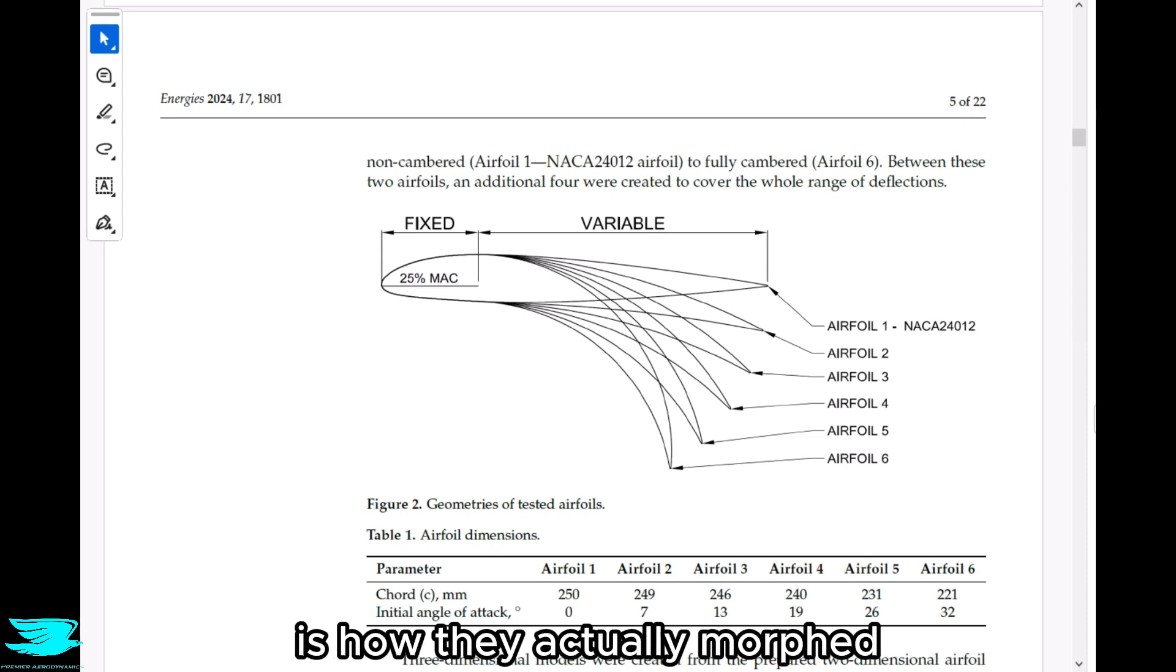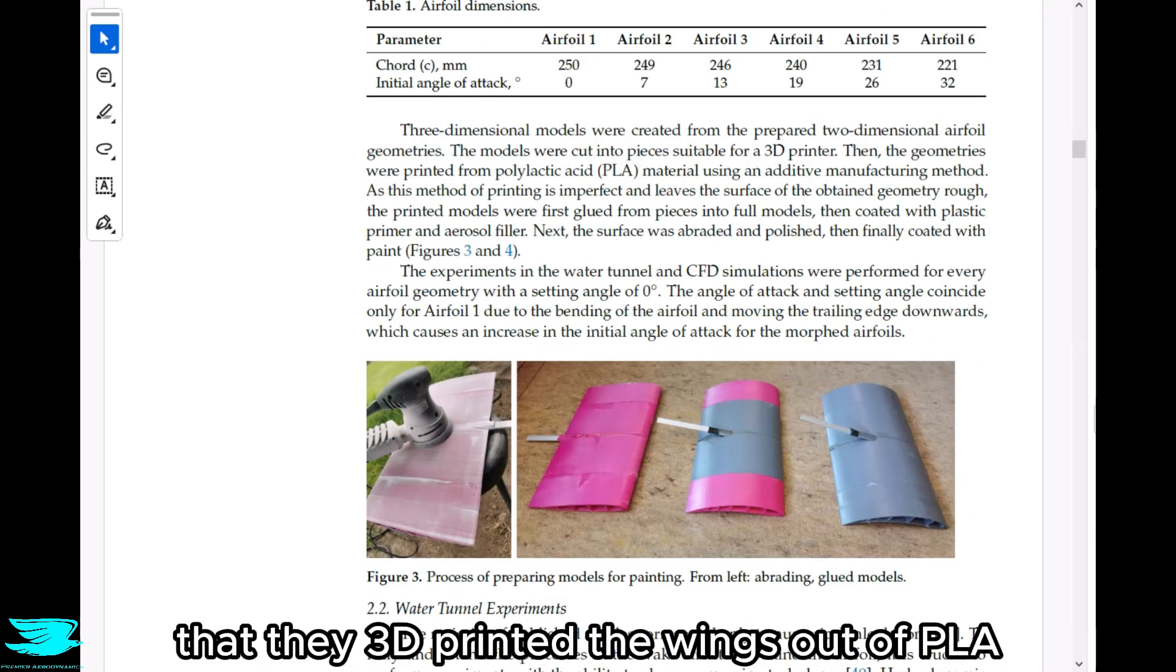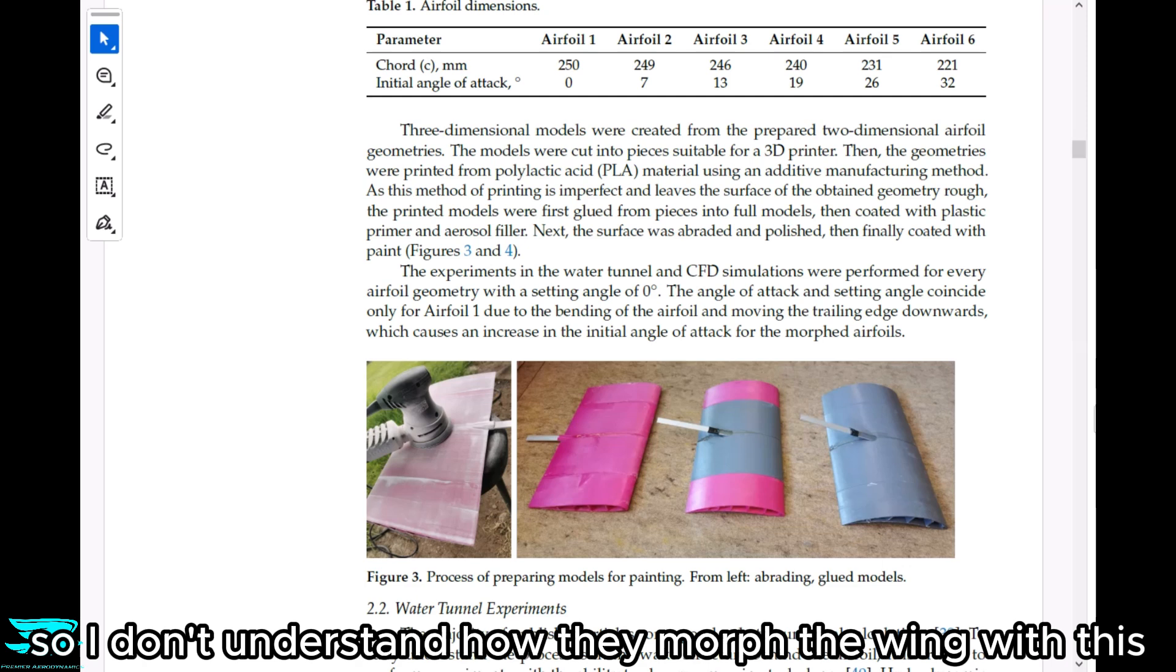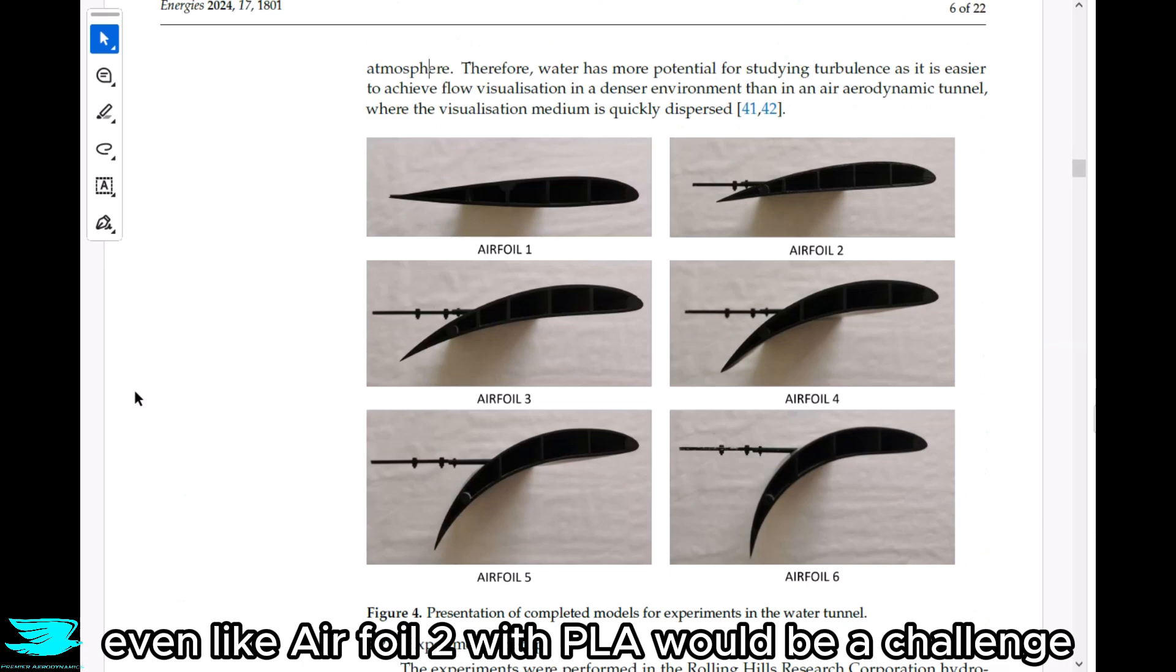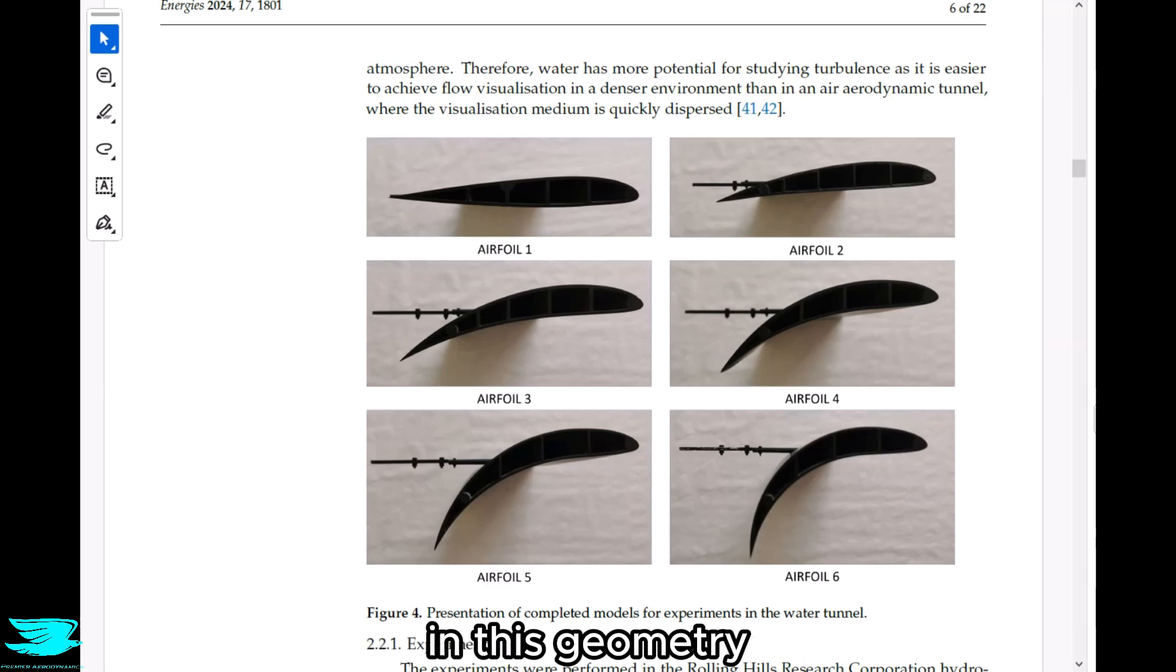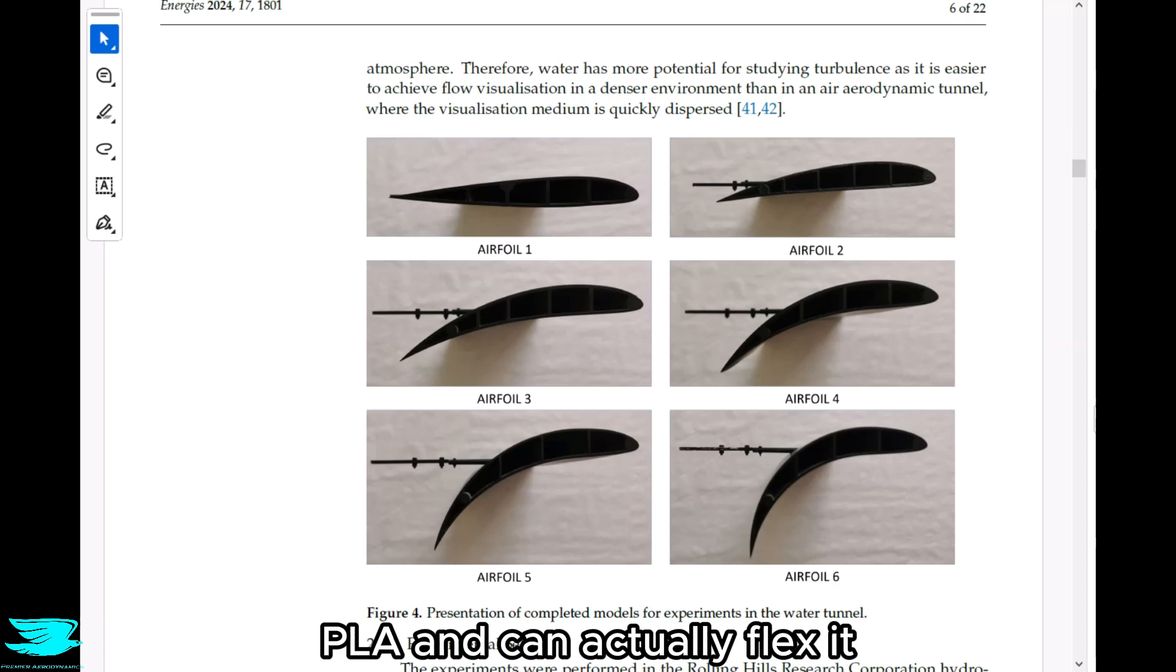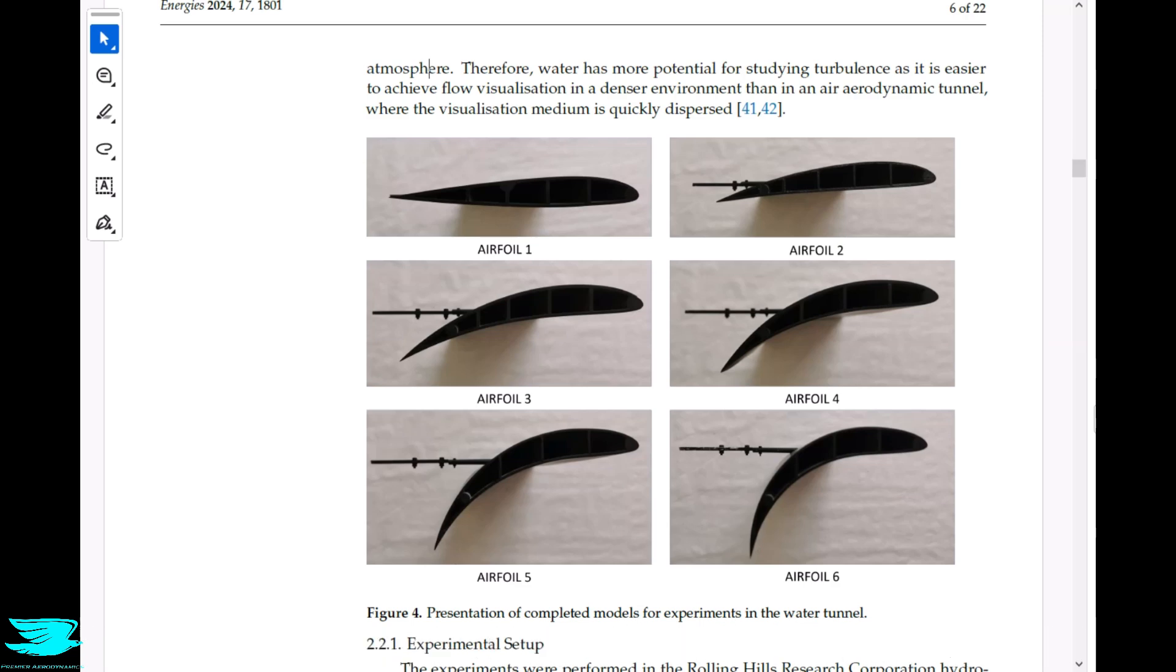Now, one thing I don't quite understand is how they actually morphed these airfoils. So the authors say, and I have some pictures here as well, that they 3D printed the wings out of PLA. I don't quite understand that because PLA is very rigid and brittle. So I don't understand how they morph the wing with this approach. Looking at figure four, looking at the level of bending the wing is going through, even airfoil two with PLA would be a challenge. Airfoil three would almost certainly break as would all the others above that. So I don't understand how they flex the airfoil unless what they mean is that each airfoil is simply in this geometry. And this is actually six different airfoils, not just one flexed to different amounts.